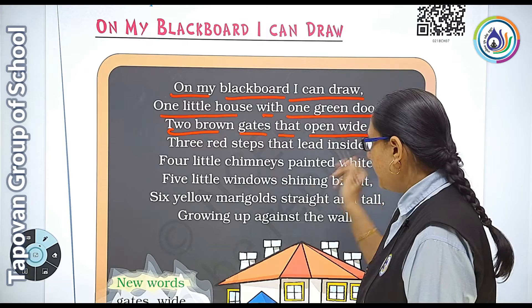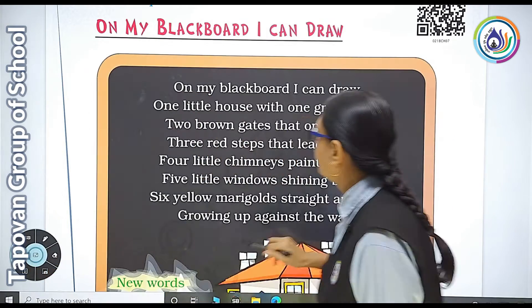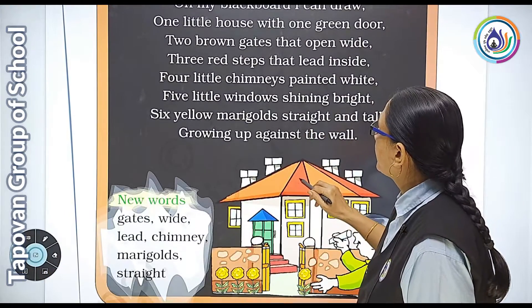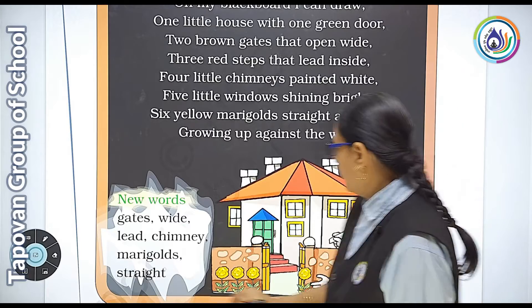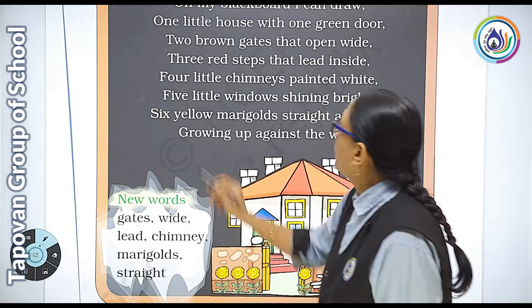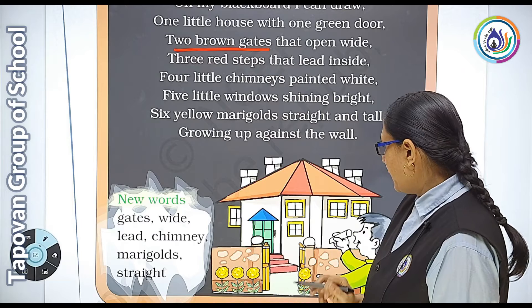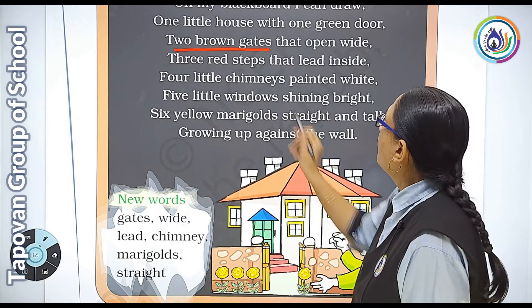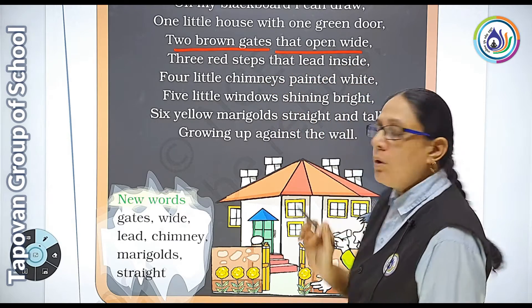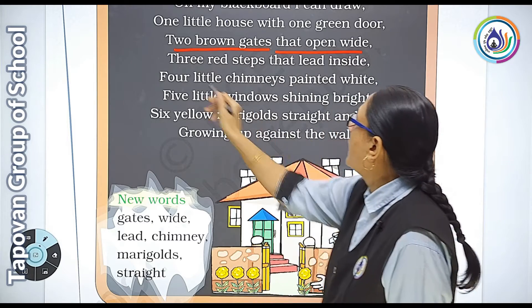Two brown gates that open wide. Two brown gates — kya kaha gaya hai? Two brown gates hain. Jo gate hai, usse thoda khol ke bana dun.